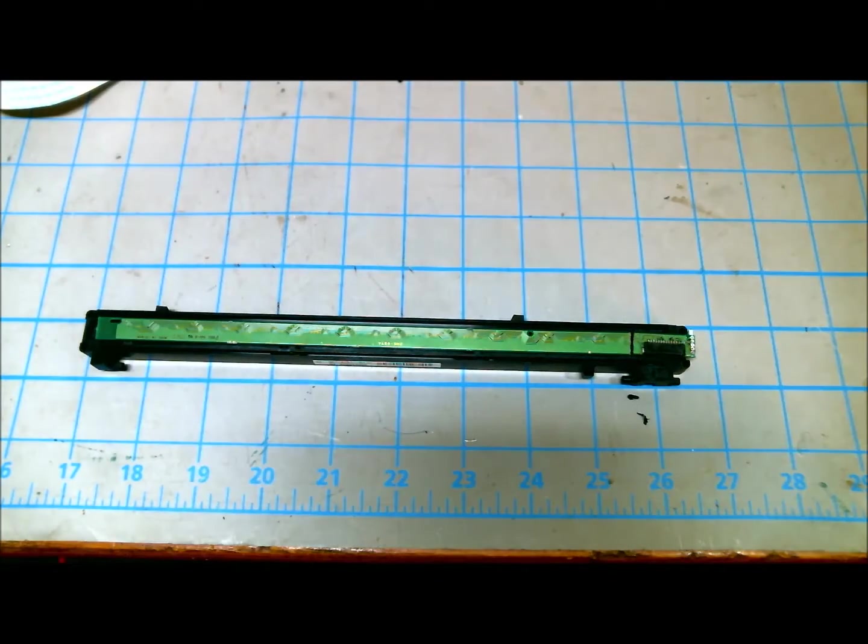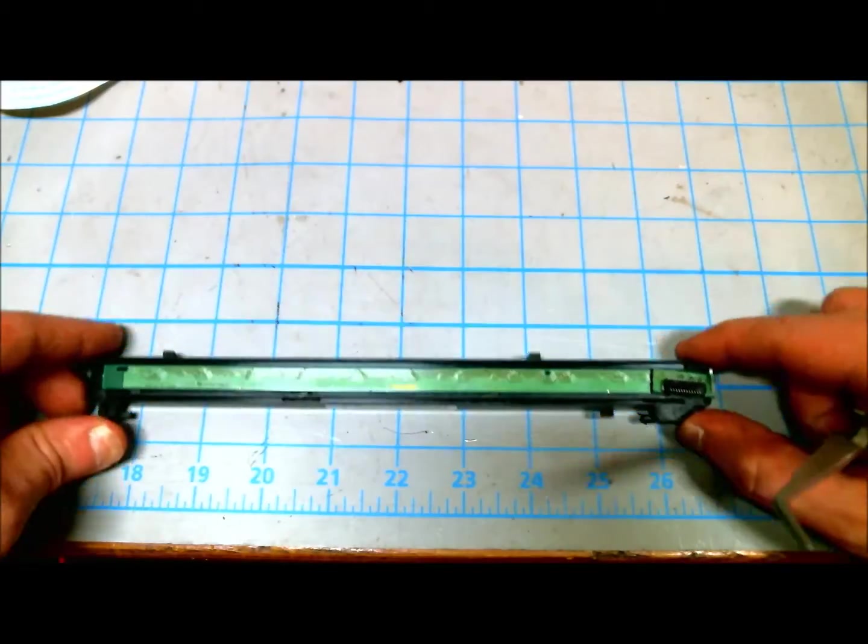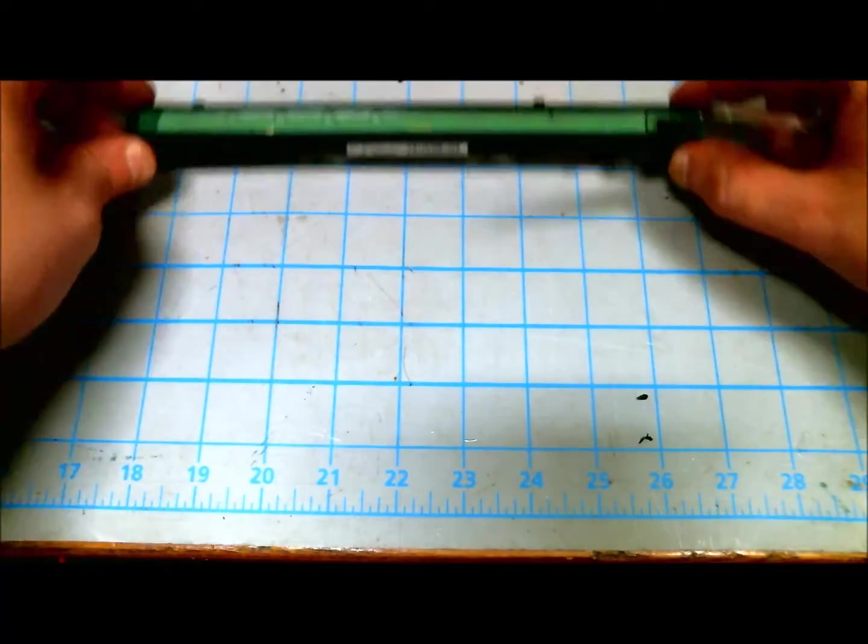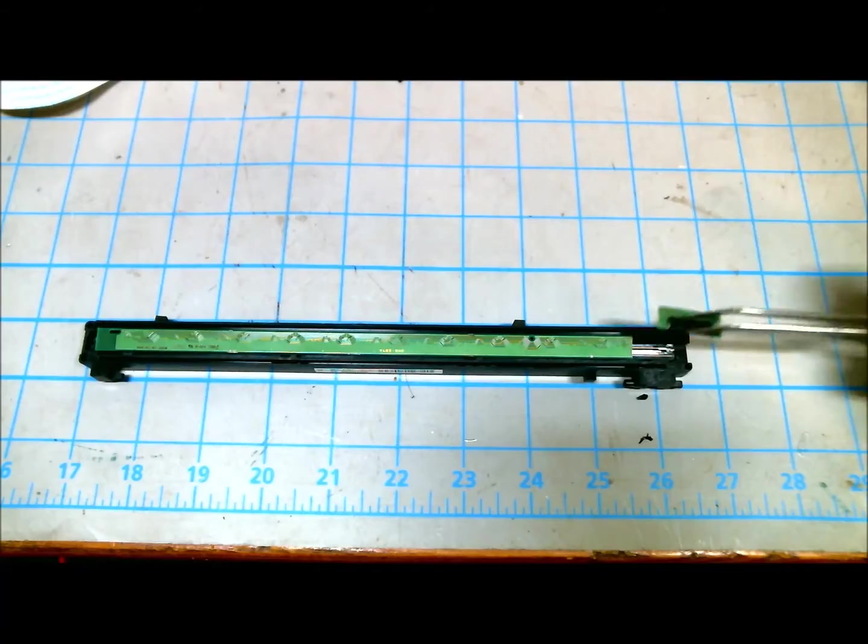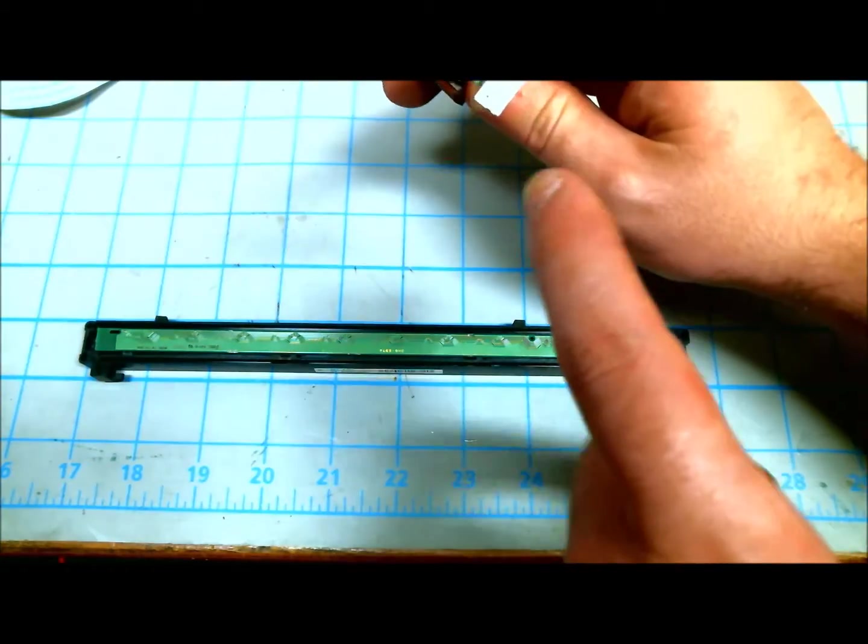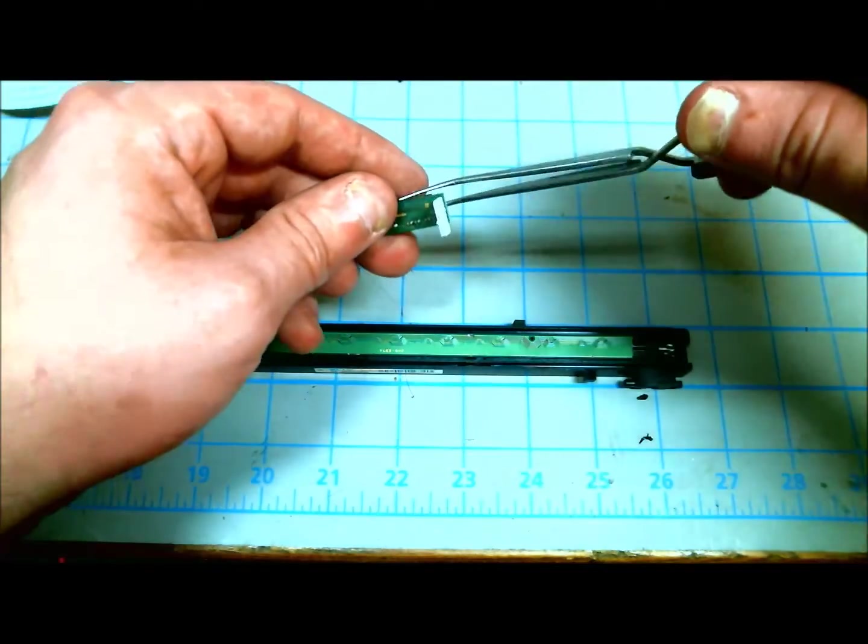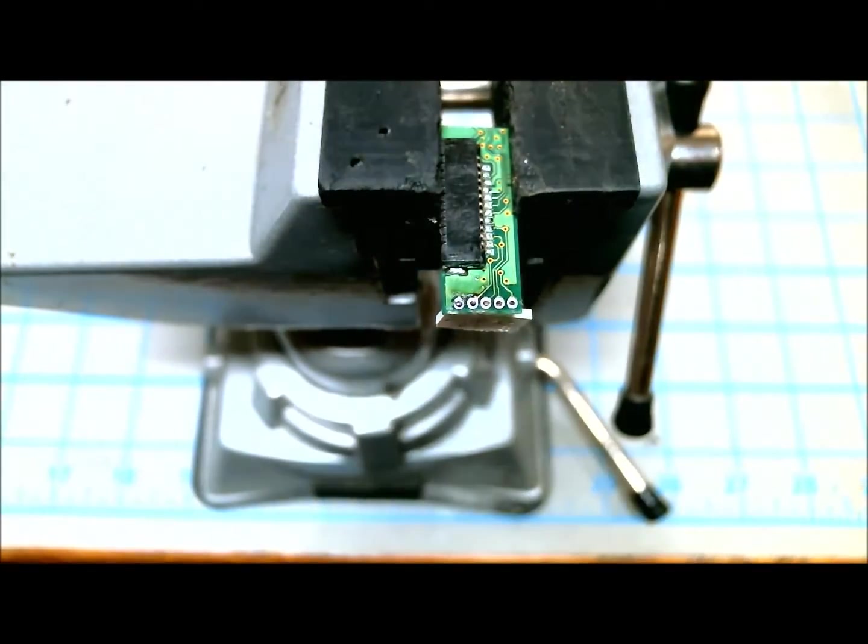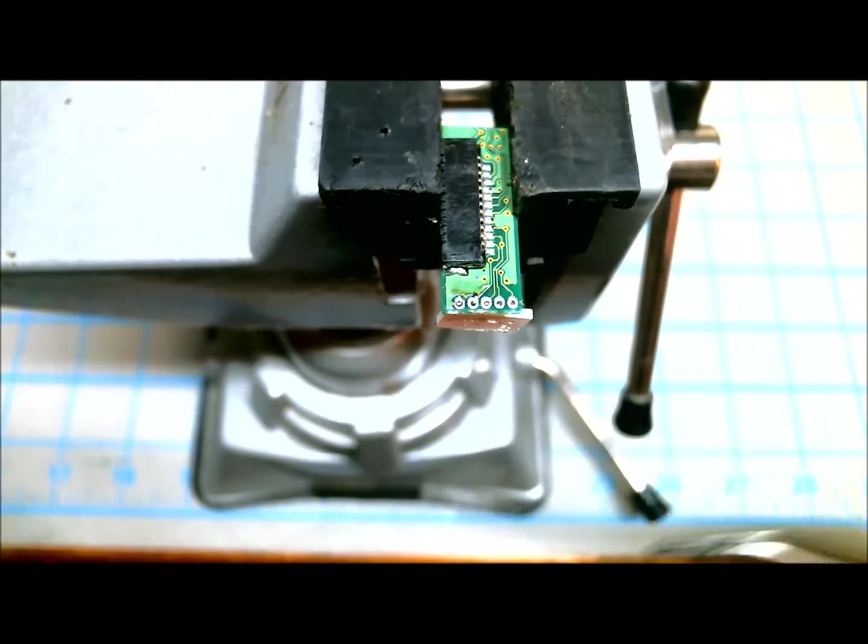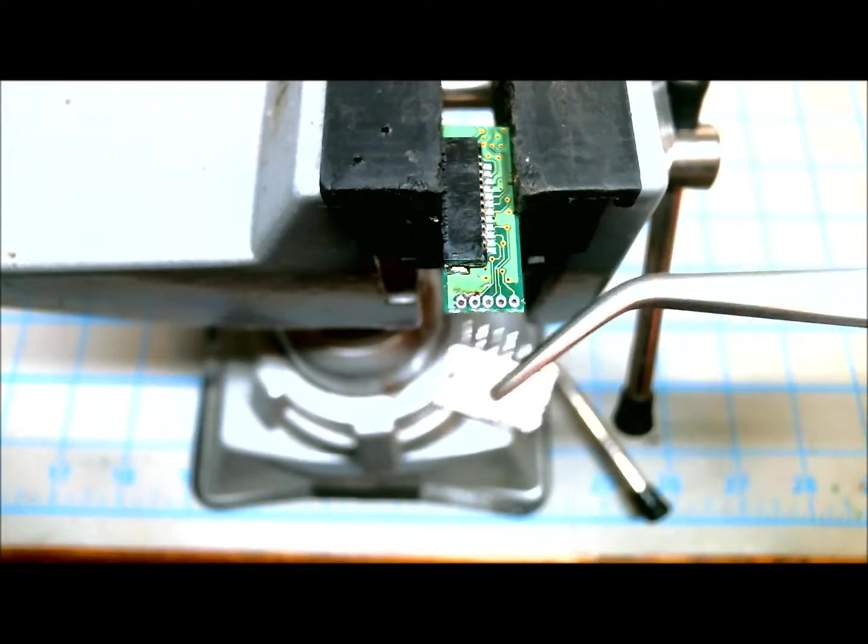So where I got my red, green, blue LED was from a modern scanner head. So the part of the scanner which moves across the page and scans it uses an RGB LED. So you can see the LED right here. And now I need to desolder that. So now the LED is removed.